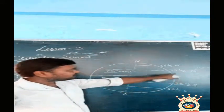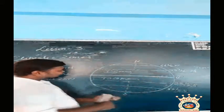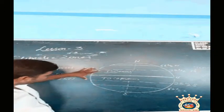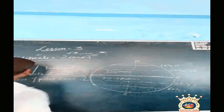From 0 degree to 23 and a half degrees, this place is considered as tropical zone or torrid zone.